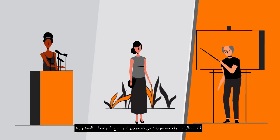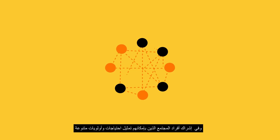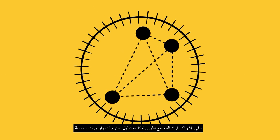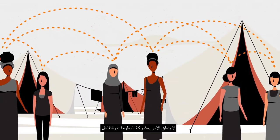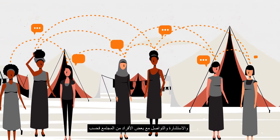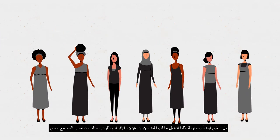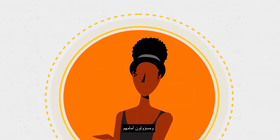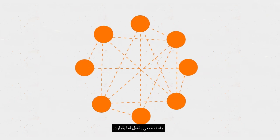But often we still struggle to design our programmes with the affected community. We struggle to engage with community members that can represent diverse needs and priorities. It is not only about sharing information, interacting, consulting and engaging with individuals and groups from the community, but also trying to ensure that those people are really representative and accountable to different components of the community, and that we really listen to what they say.